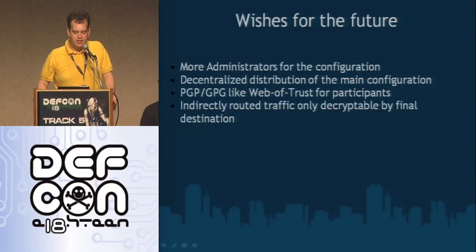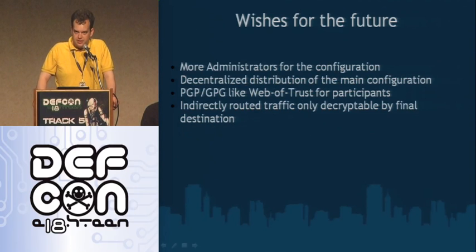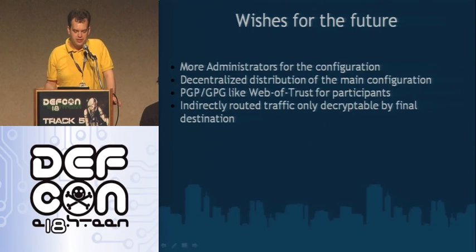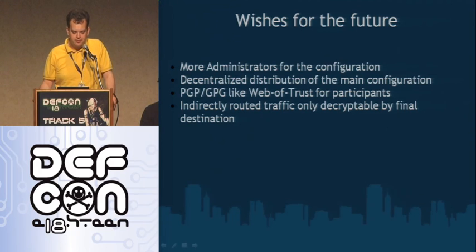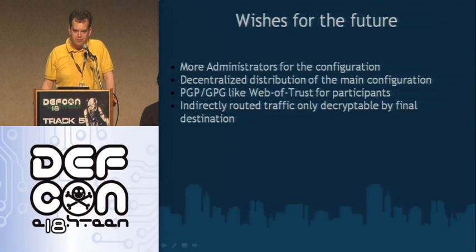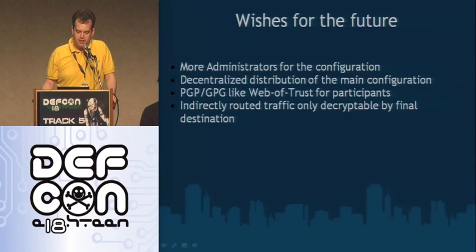In the future, we'd like to have more administration options for the configuration and more distribution points, even a decentralized configuration distribution. We'd also like to give participants more choice in who they trust. Currently they trust a central configuration, but you could extend that to a PGP-like web of trust, so every participant can select certain nodes in the network they trust and some they don't trust as much. We'd also like to have indirect routed traffic that is only decryptable by the final destination, so you can route traffic between two nodes that can't see each other through a third node that passes the traffic but cannot decrypt it.